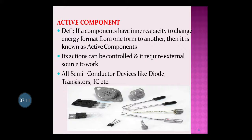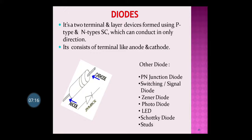Here some active components are shown. We will talk about the active component diode — it is a two-terminal device made up of semiconductors: p-type and n-type. Semiconductors are classified as intrinsic semiconductor (pure semiconductor) and extrinsic semiconductor (where some impurities are added — that process is called doping). From doping, you get two types: p-type and n-type. When p-type and n-type are connected together, a p-n junction diode is formed.